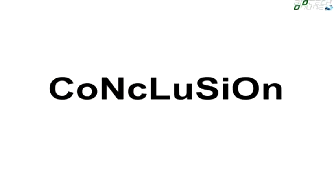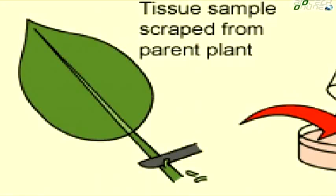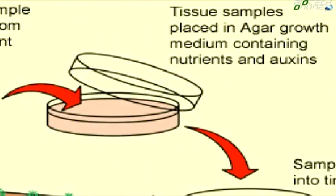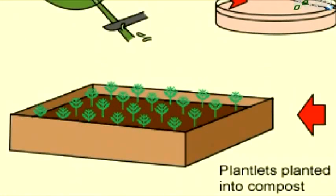In conclusion: tissue culture is a technique or process of keeping tissues alive and growing in a culture medium. Plant tissue culture is a simple four-step process: in step one, a tissue sample is scraped from the parent plant; in step two, tissue samples are placed in an agar growth medium containing nutrients and growth hormones; in step three, the sample develops into tiny plantlets; and in step four, the plantlets are transferred onto compost for further growth.